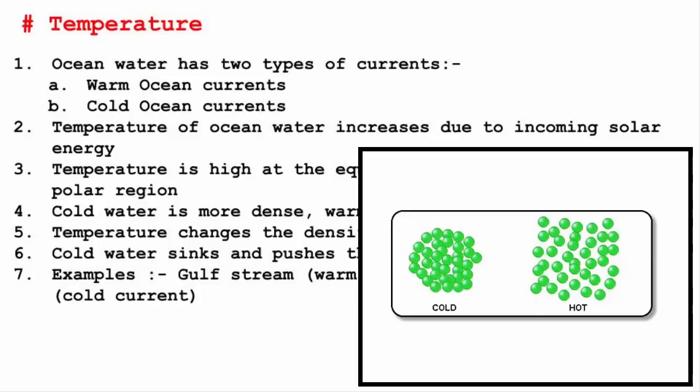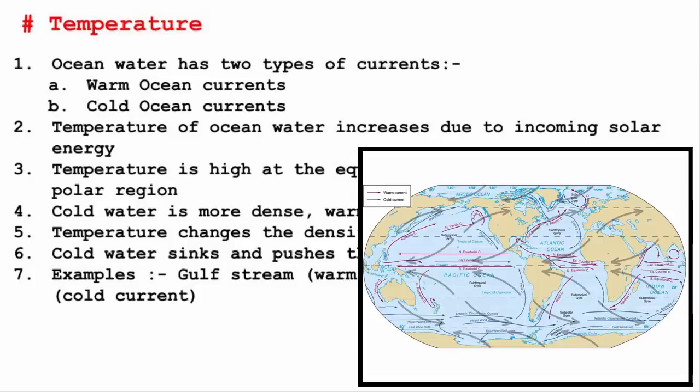Hence we can also say that the density of ocean water becomes comparatively greater in the polar areas. Now this change in the density of water creates ocean currents and also makes the water move up and down through the ocean layers.